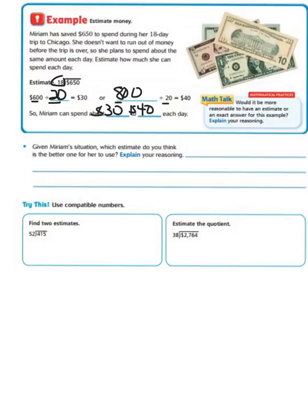Given Miriam's situation, which estimate do you think is the better one for her to use? Well, honestly, she should use the estimate of the $30, because 40 times 18 actually equals $720, and that is going over her $650 amount.